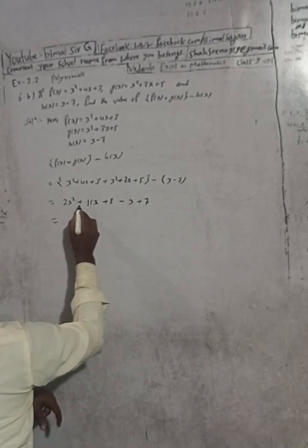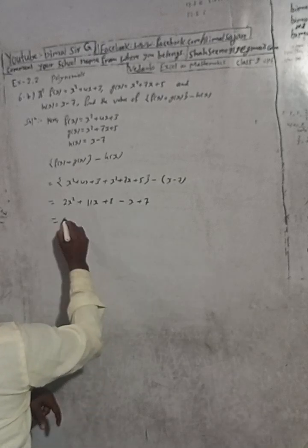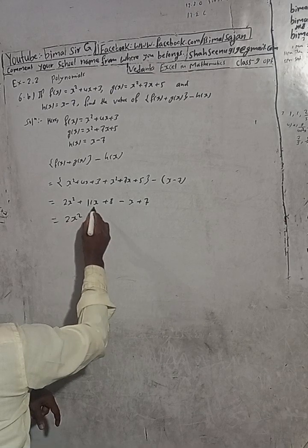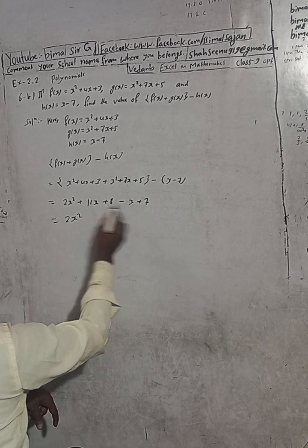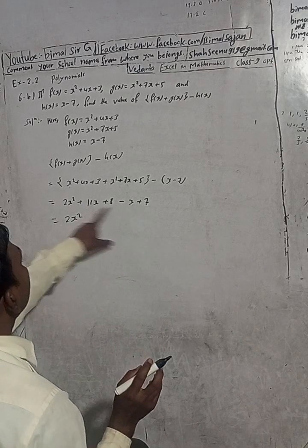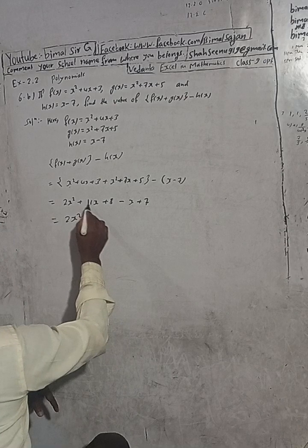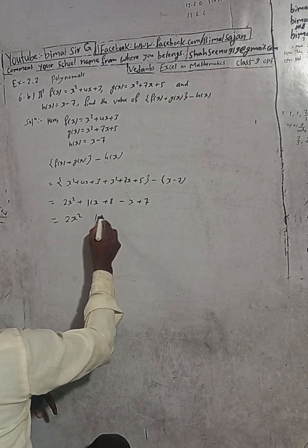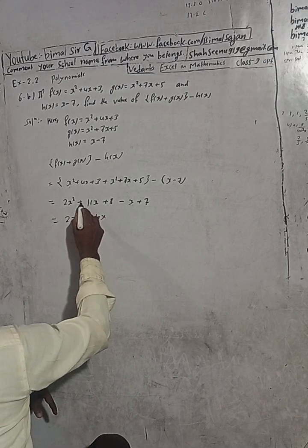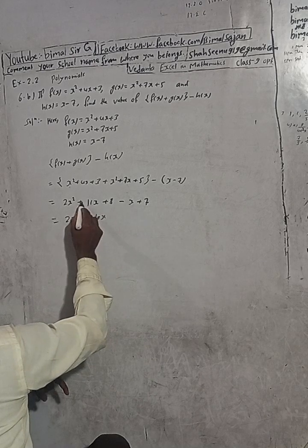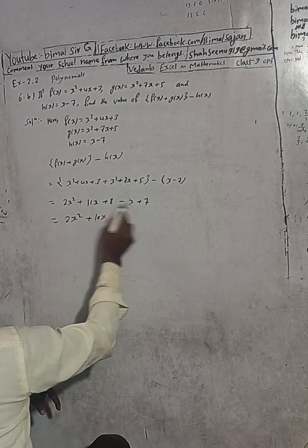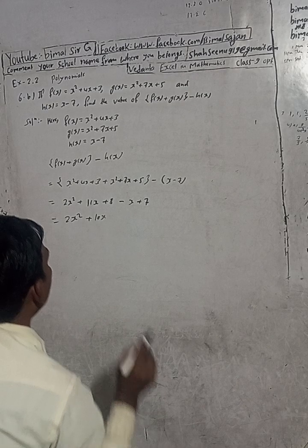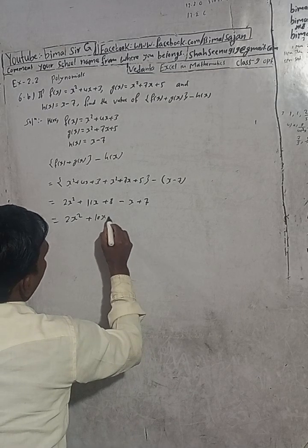Now we can see: 2x squared stays as it is, since there's no other x squared term. For x terms: 11x minus 1x — these are like terms, so subtract: 11 minus 1 equals 10x. 11 has the plus sign so take plus, giving plus 10x. For constants: 8 plus 7 equals 15.